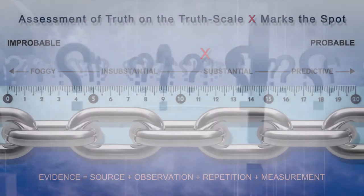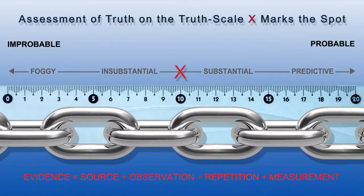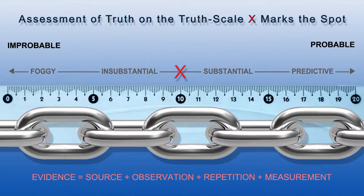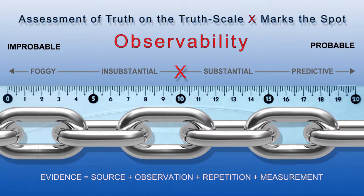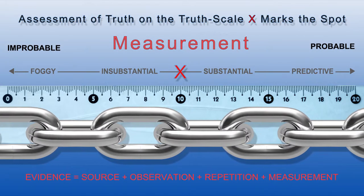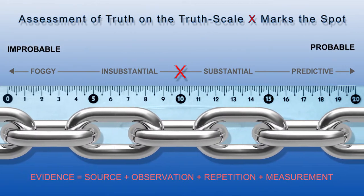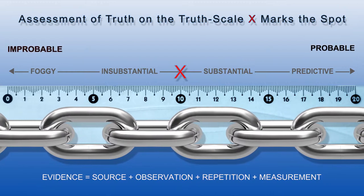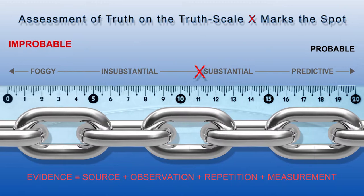Where does Charles Darwin's great truth of evolution by natural selection finally fall on our truth scale? It is a highly probable truth. Any truth worthy of a high position on our truth scale must be based on a chain of evidence that is observable, repeatable, and measurable. If any one of these elements is missing from the claimed truth, then it must be considered suspect and placed firmly at the foggy end of our truth scale.